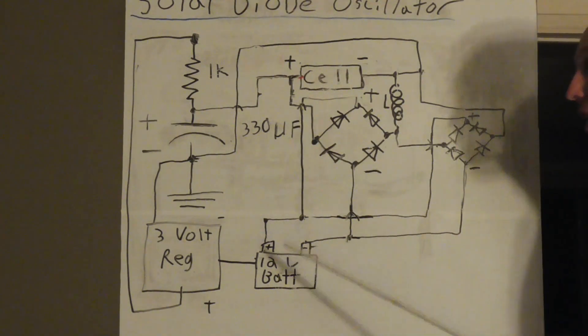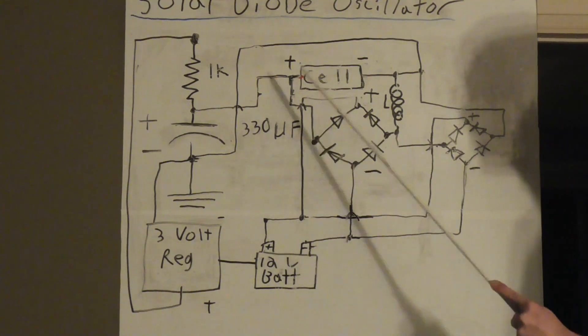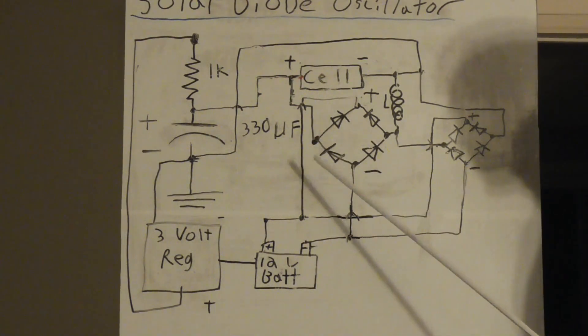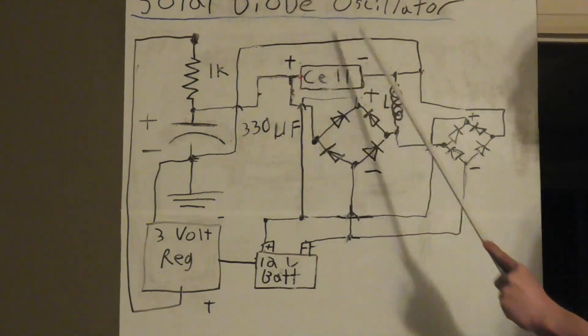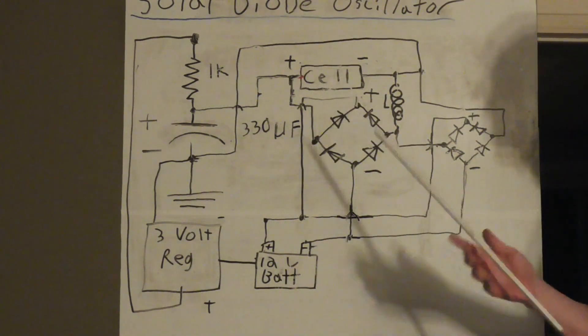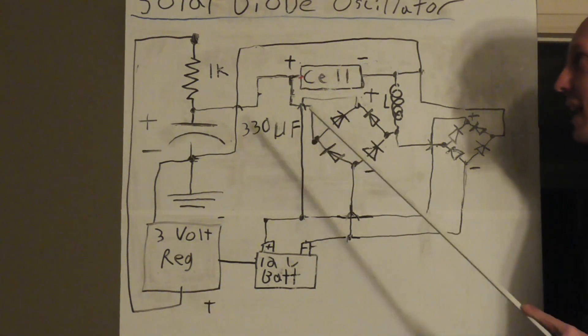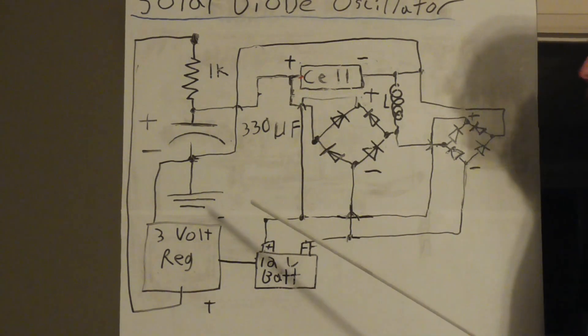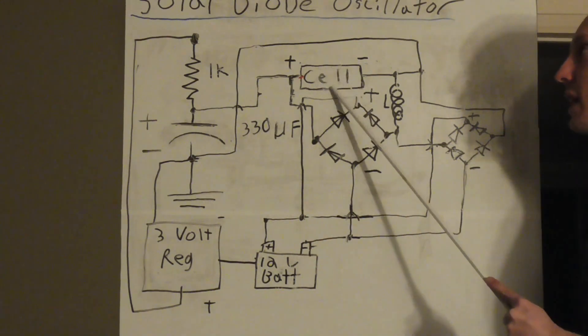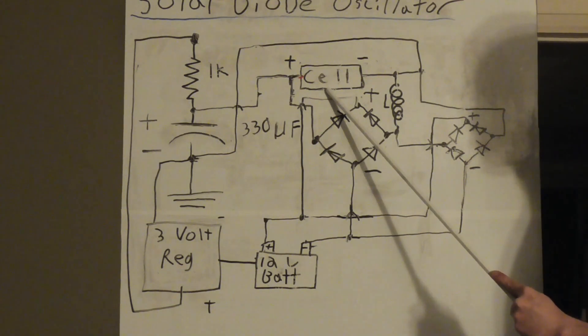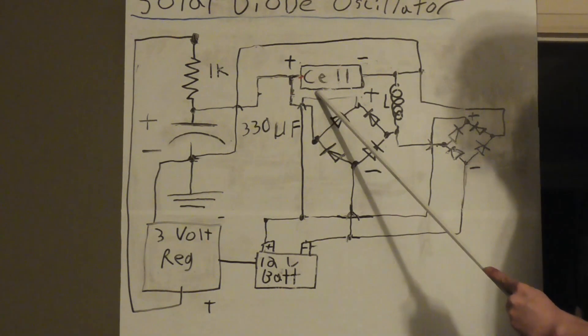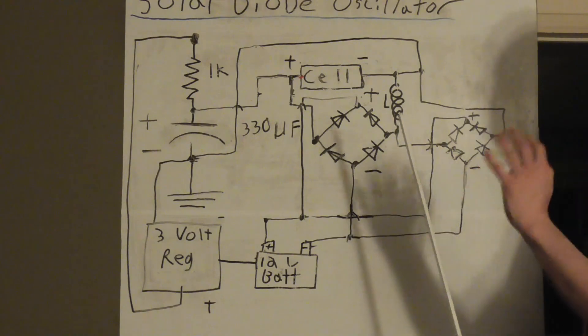To show you how the circuit works, I'm sorry I had to draw this because I'm not a good drawer, but I couldn't find any CAD simulation software that took into account the solar cell properties as a diode oscillator, either through the forward voltage or the reverse breakdown voltage.